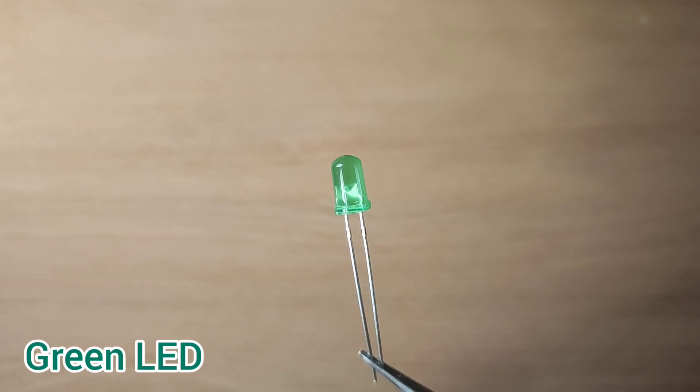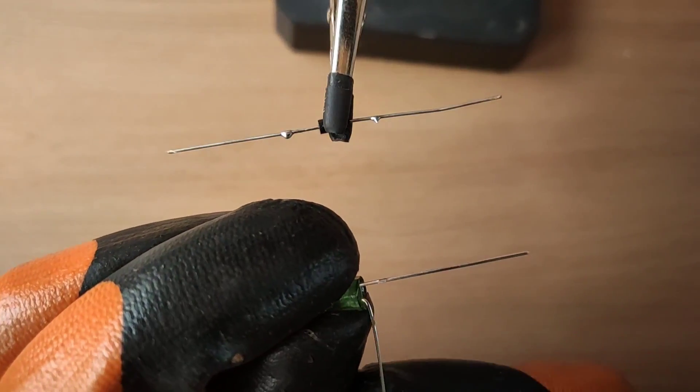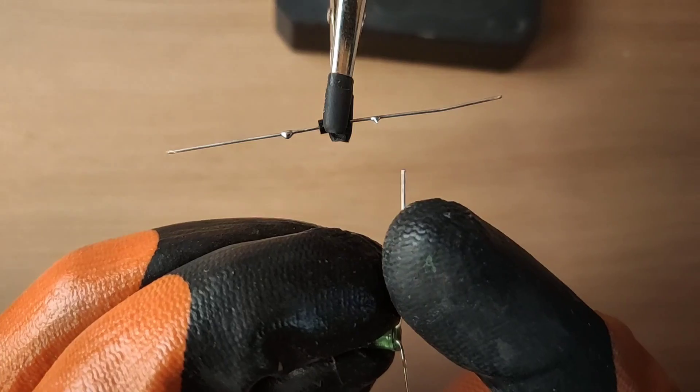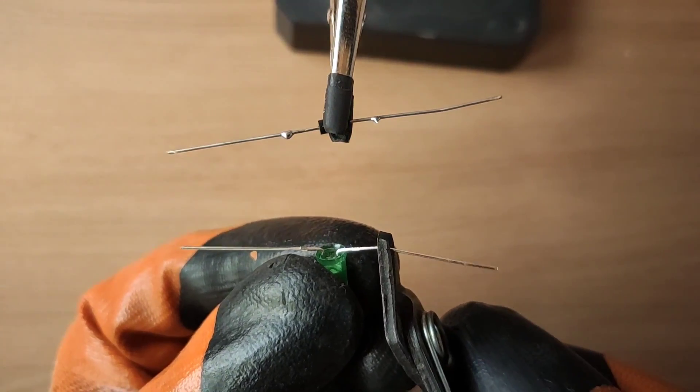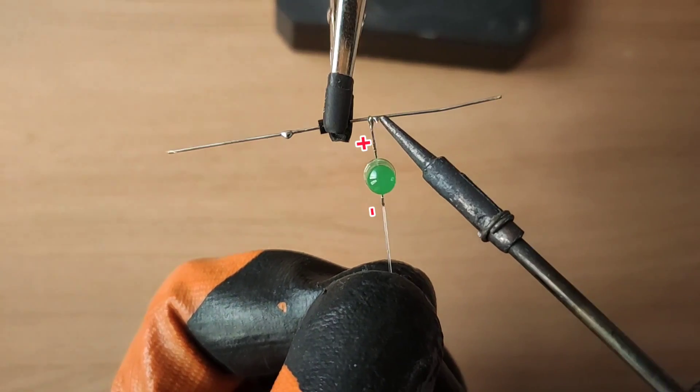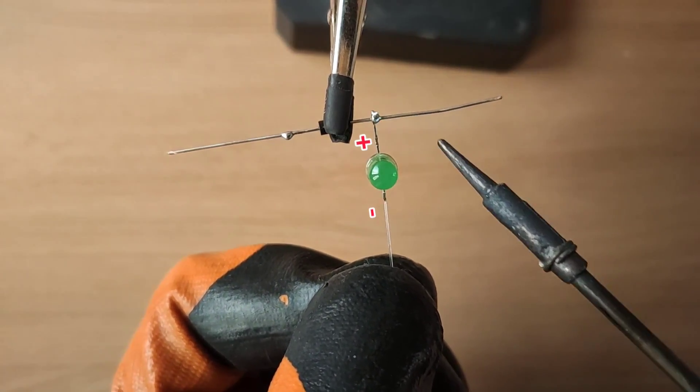Take a green LED. Bend the leads of LED and trim positive lead. Now solder the LED positive with diode's cathode side.